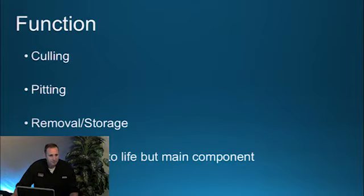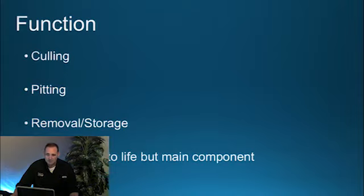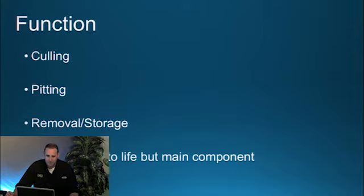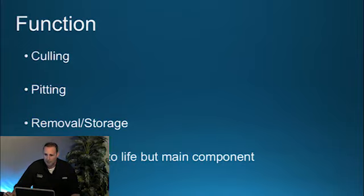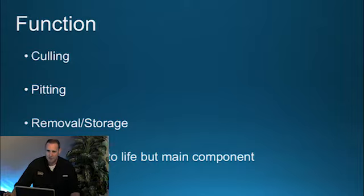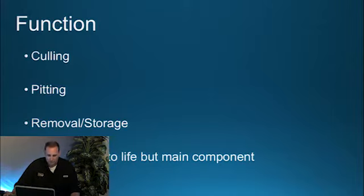A couple other important functions of the spleen: culling is the removal of defective cells from the system. For example, sickle cells or spherocytes trying to pass through the sinus walls — because of their shape, they don't have the typical biconcave shape that a normal red blood cell has, so these cells get caught in the sinus walls and are removed and destroyed. This is called culling.